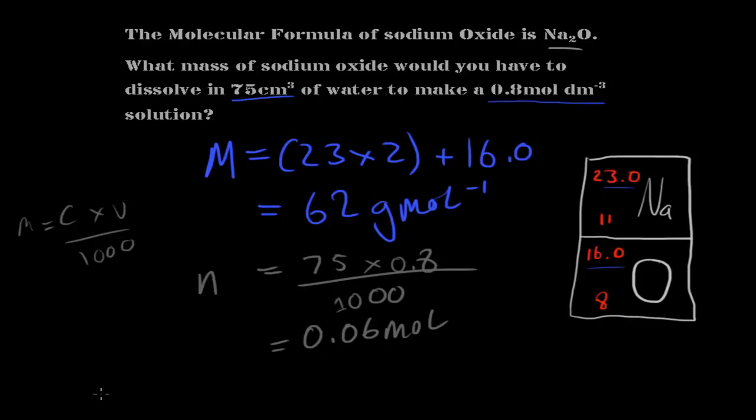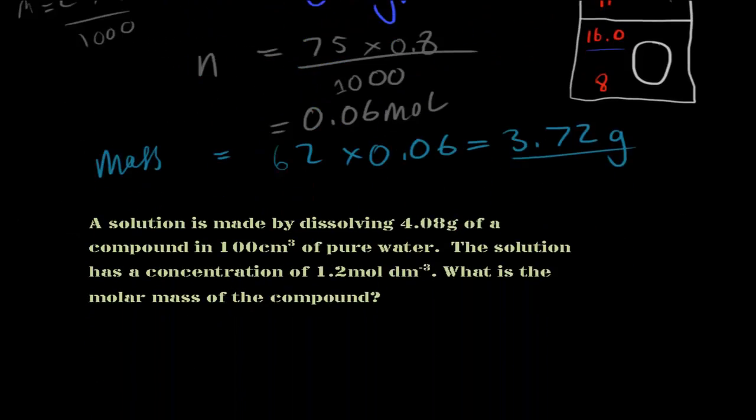So the mass equals 62 multiplied by 0.06, which is equal to 3.72, and that's going to be in grams. So that's our answer, 3.72 grams, the mass of sodium oxide which we need to dissolve. Okay, next question.